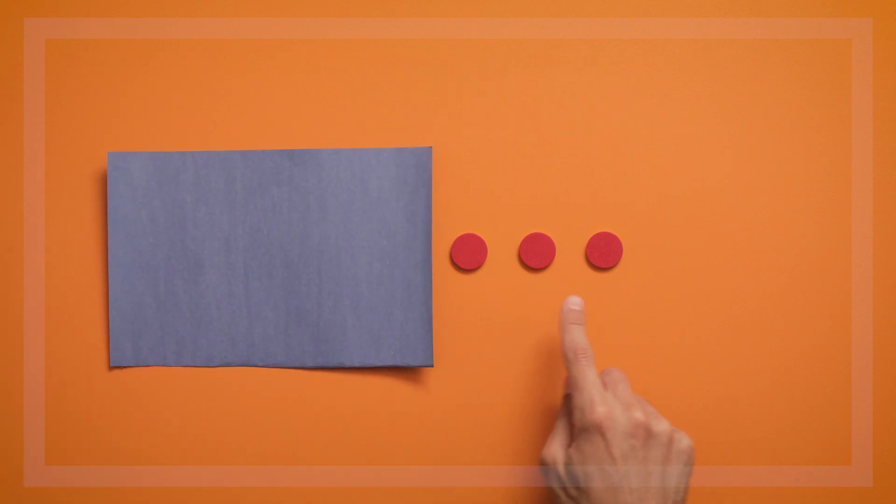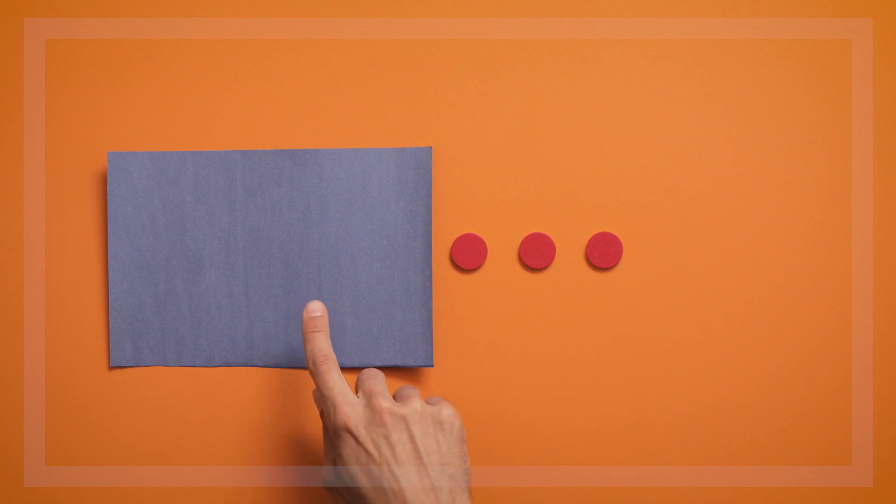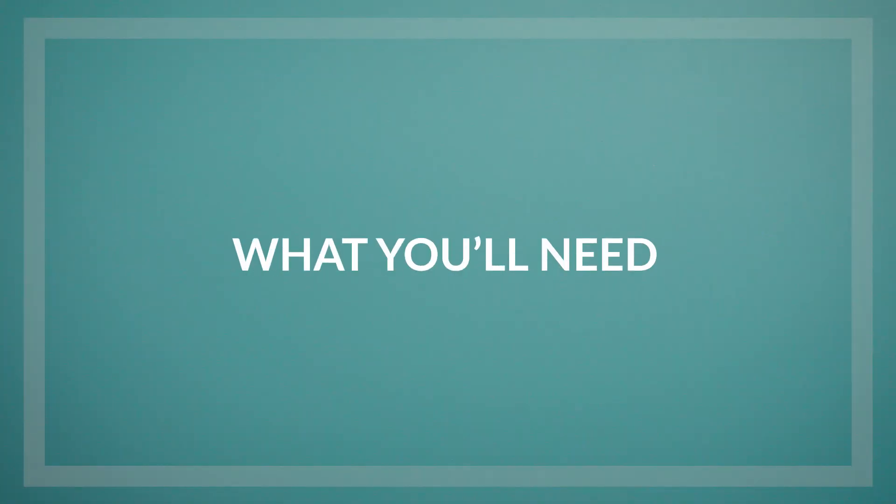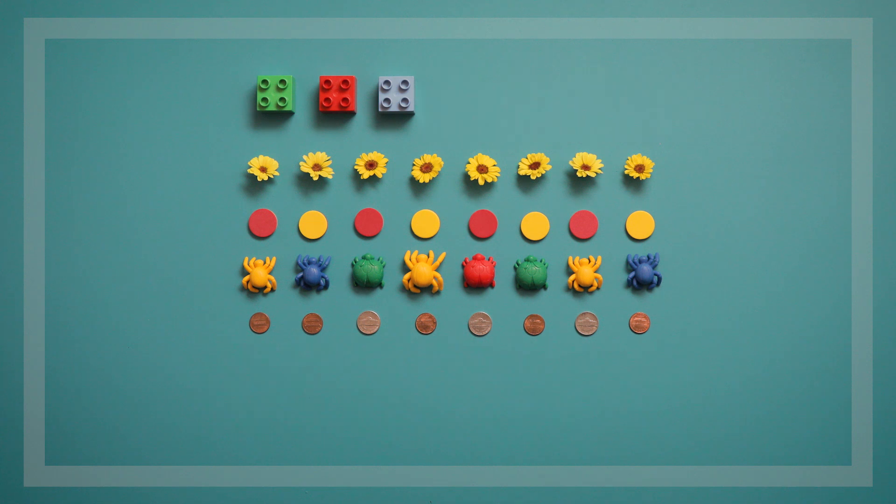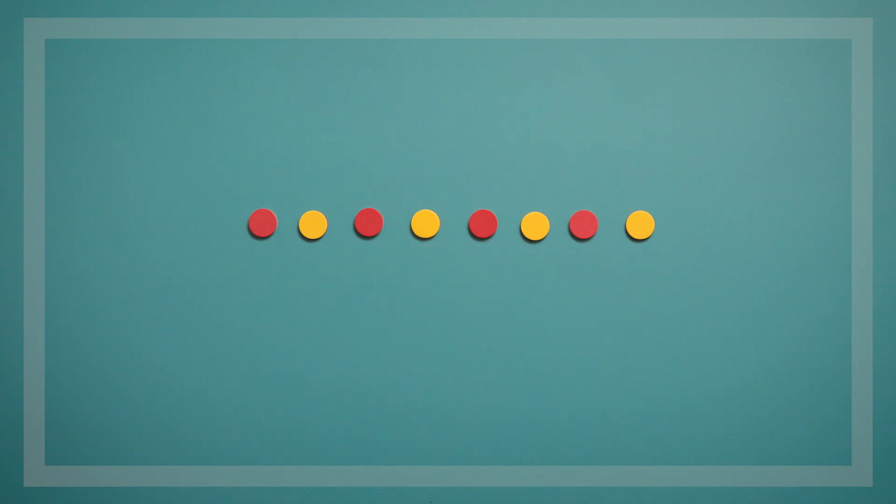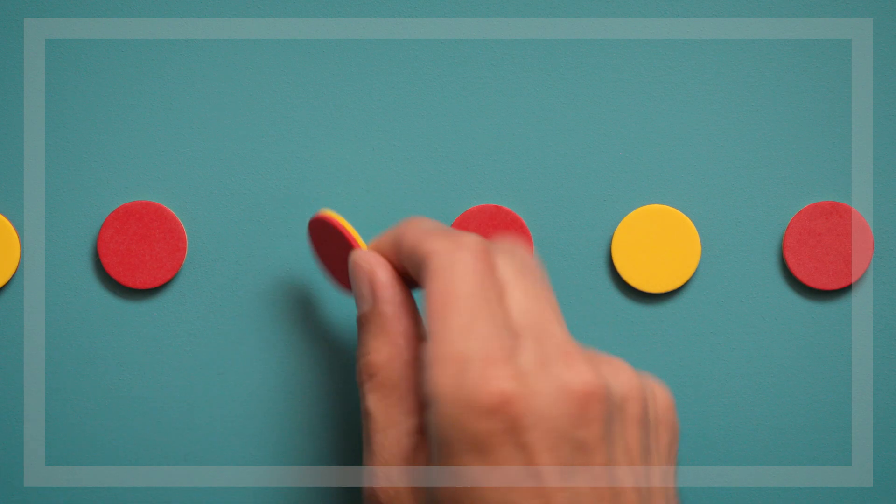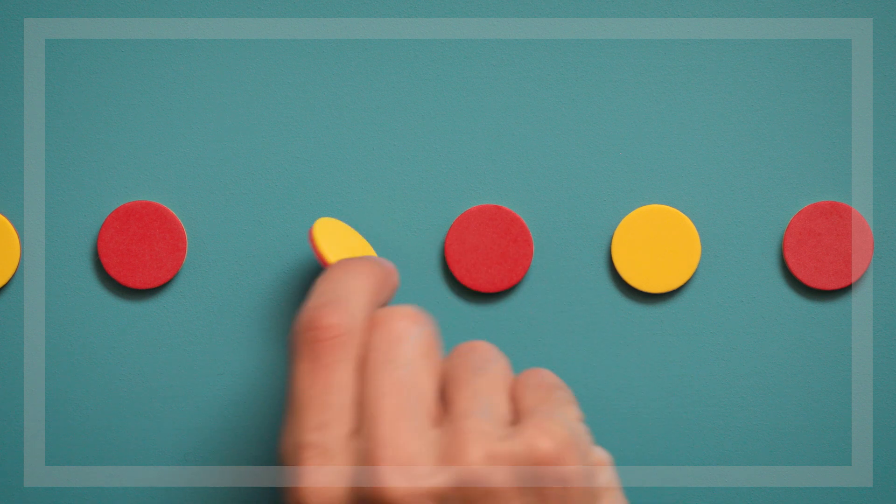This is a more advanced counting game that we play with four, five, and six-year-olds. You can play How Many Are Hiding with any type of object, but we like to use these counter tokens because they're not too interesting and kids can focus more on the math they're doing.